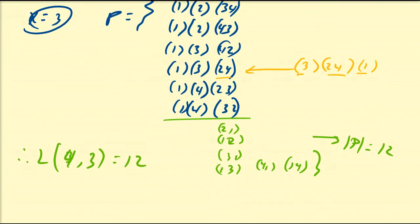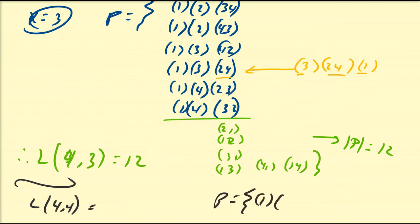And as usual, L(4, 4) — the only partition possible is the singleton sets {1}, {2}, {3}, {4}, so L(4, 4) = 1.